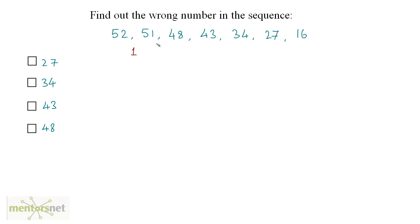The difference between the second two numbers is 3. 48 plus 3 should give you 51. The difference between these two numbers 48 and 43 is 5. Now, what is the difference between 43 and 34? Well, if you subtract 34 from 43, you will get it as 9. And 27, if you subtract it from 34, you will get it as 7. And 27 minus 16 is 11.